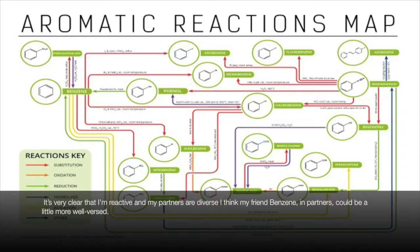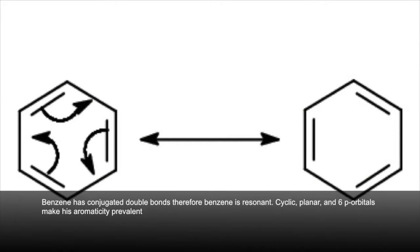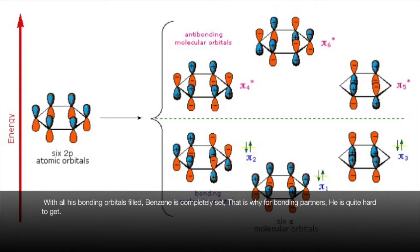I think my friend benzene and partners could be a little more well-versed. Benzene has conjugated double bonds, therefore benzene is resonant. Cyclic, planar, and 6 p orbitals make him aromatically prevalent. With all his bonding orbitals filled, benzene is completely set. That is why for bonding partners, he is quite hard to get.